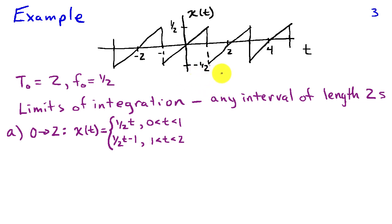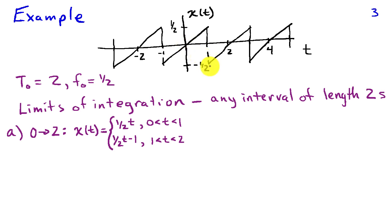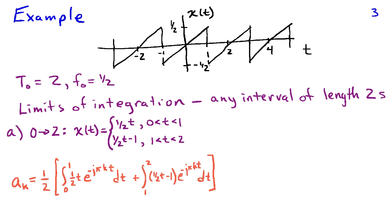Let's suppose we start with choosing an interval from 0 to 2 seconds. If I write down what x(t) is over that interval — because I'm going to need to substitute that into the integration formula — in this case x(t) is (1/2)t when t is between 0 and 1. That's a straight line with slope 1/2 and intercept 0. However, when t is greater than 1, the equation for x(t) needs to change. The slope remains the same, but the intercept for this second segment is different. So on the interval from 1 to 2, x(t) is (1/2)t minus 1.